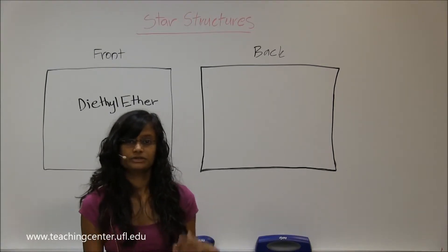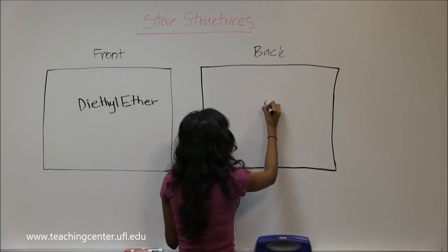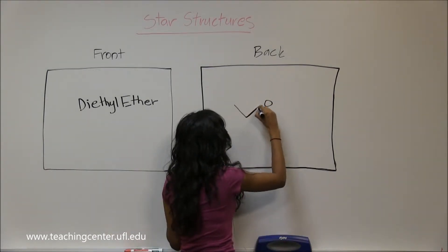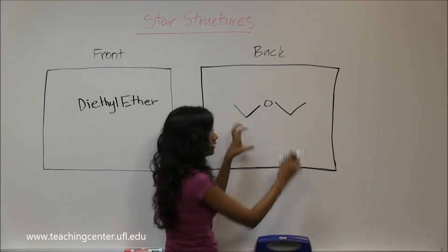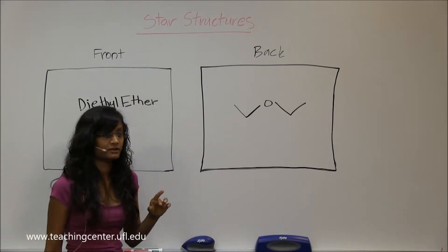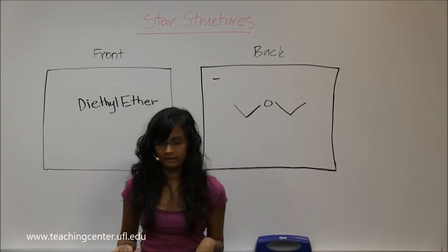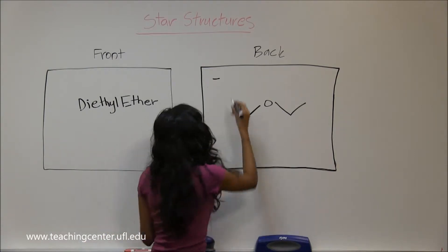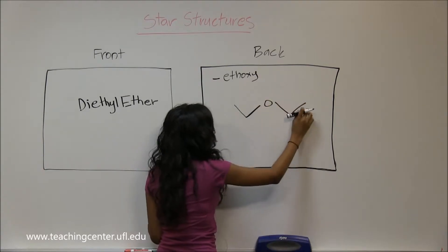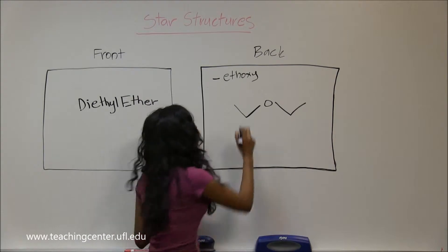Diethyl ether is a very good solvent that you're going to use a lot in lab. It has an ether functional group with two ethyl groups on each side — that's why it's called diethyl ether. In the IUPAC name, you're going to call it ethoxy — that's one ethoxy group — ethane.